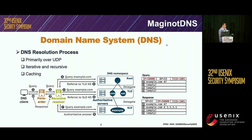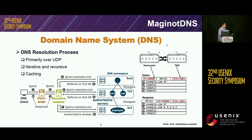Regarding the packet, there are two important fields — source port and TXID — to match the query and the response. In total, the source port and the TXID are all 16-bit spaces, giving 32 bits to guarantee a query can be matched with the response.